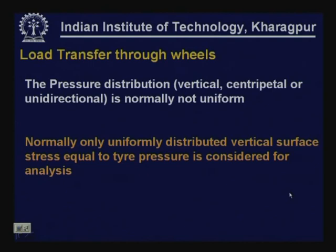The pressure distribution within the contact area — whether vertical, centripetal, or unidirectional — is not normally uniform. Tire imprint studies show it is never perfectly uniform, but we typically assume uniformly distributed vertical stress equal to tire pressure. For rigorous analysis, exact non-uniform tire pressure distribution can be used to identify pavement failure associated with it.